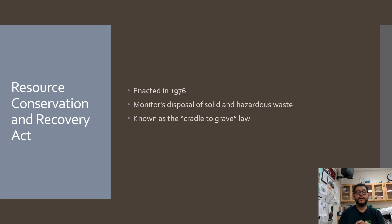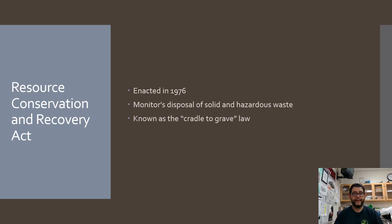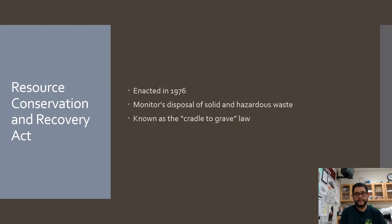And then we have RCRA, the Resource Conservation Recovery Act. This one was enacted in 1976 and is very related to CERCLA. While CERCLA sets up a fund by taxing companies to cover cleanup when we don't know the source of toxic waste, RCRA aims to prevent those situations from occurring in the first place. If a company produces toxic waste, they must provide a plan for how they create it, use it, and dispose of it. It's otherwise known as the cradle-to-grave law.